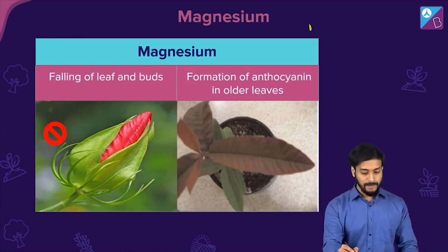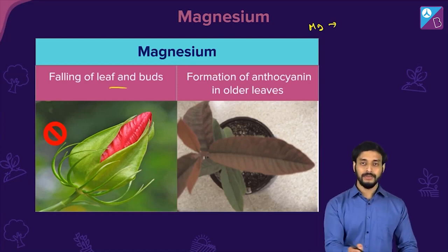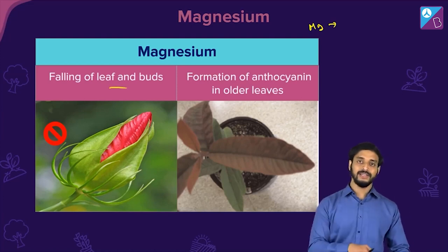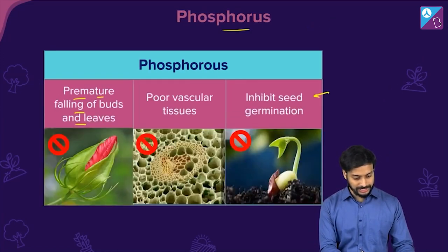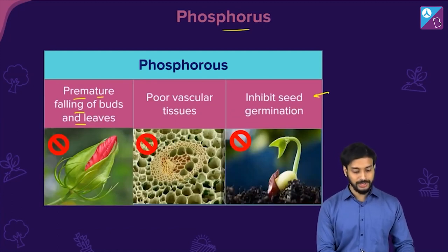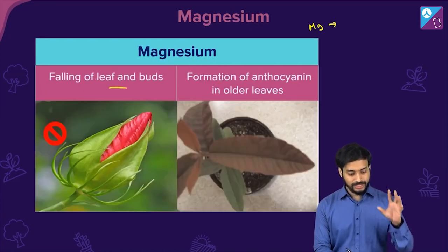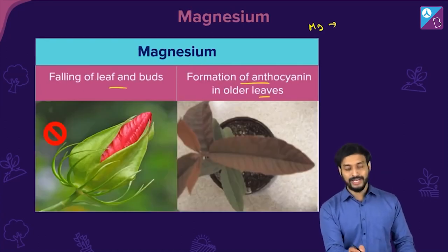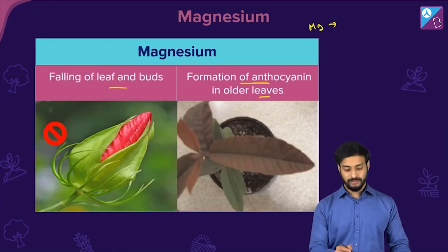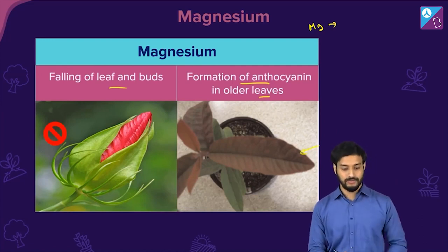Magnesium deficiency causes premature falling of leaves and buds — similar to phosphorus — and formation of anthocyanin, similar to nitrogen. In older leaves, they become brown due to this pigment formation when magnesium is not present in proper amounts.